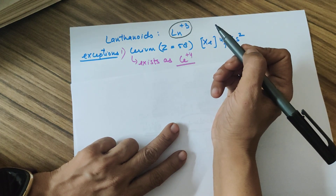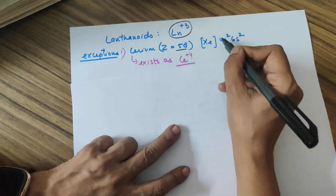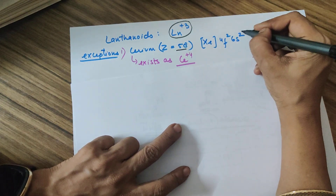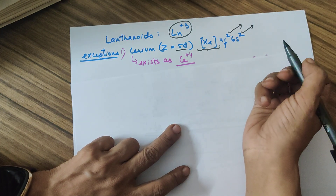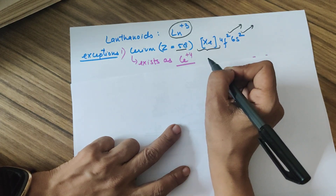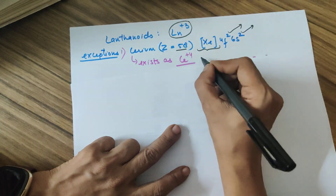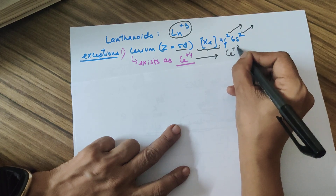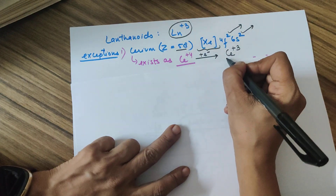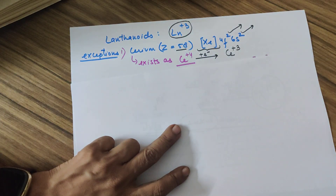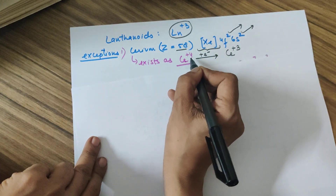Exceptions in lanthanoid oxidation states: Cerium (Z=58) has configuration [Xe] 4f² 6s². Given the choice, it prefers to lose all four electrons to attain a noble gas configuration, showing a +4 oxidation state. Since Ce⁴⁺ prefers to return to the common +3 state by gaining an electron (reduction), cerium(IV) acts as a very good oxidizing agent. This is a common board question.